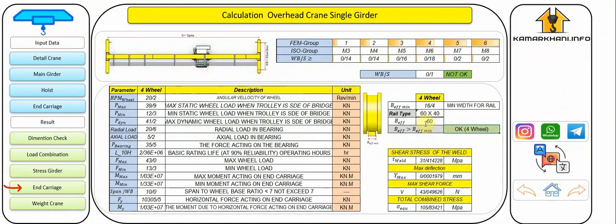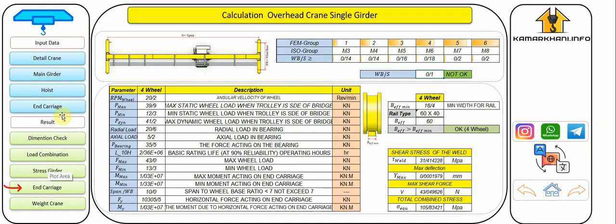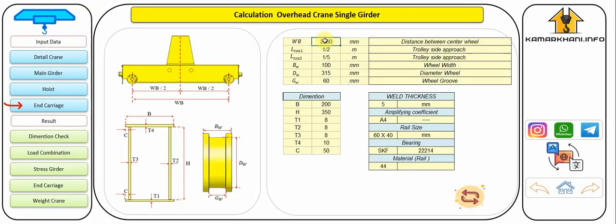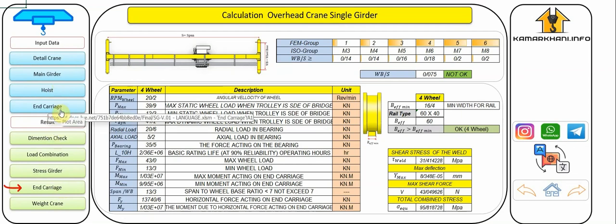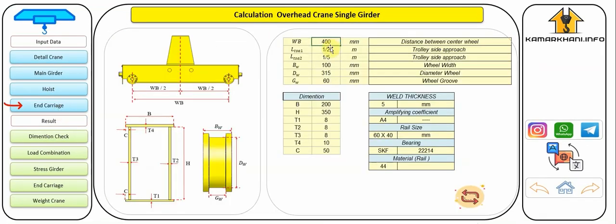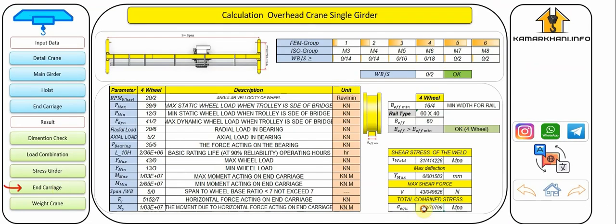At this stage, you can see the stresses applied to the end carriage. The size of the rail is acceptable as you can see. The size of the rail depends on the diameter of the end carriage wheel, the longitudinal speed of the crane, and also the working group of the crane. Also, the material and size of the entrance rail is very effective.